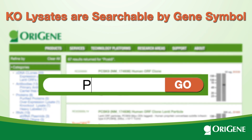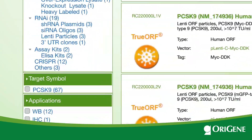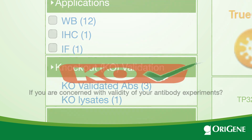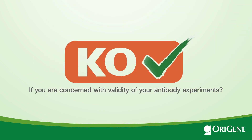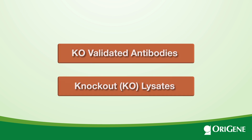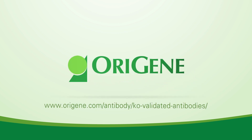Both the KO cell lysates and the KO validated antibodies are searchable by typing a gene symbol into the search box. Are you concerned with the validity of your antibody experiments? Come to Origene to select pre-validated antibodies, or choose the KO lysates to validate your own antibodies. For more details, please visit the Origene website.